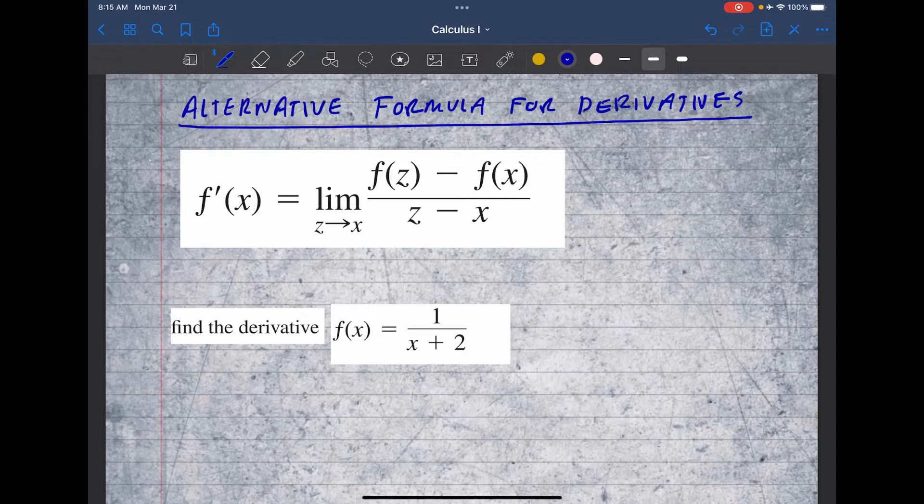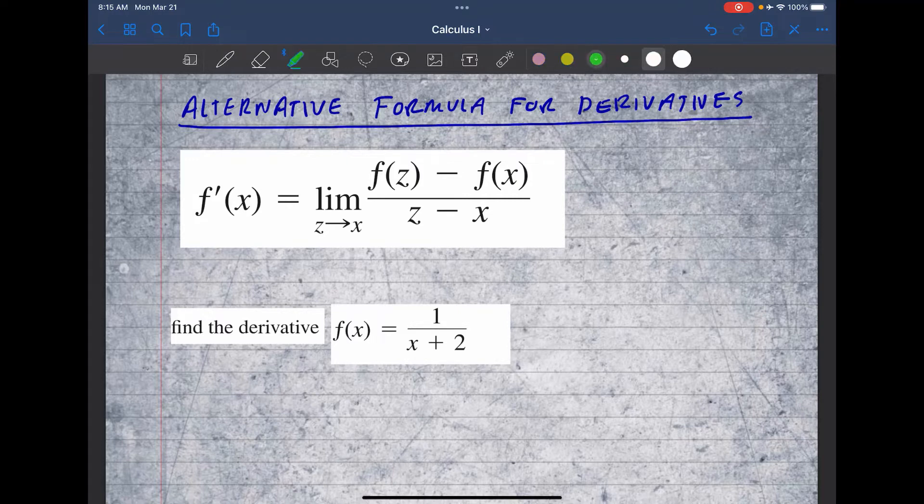Let's use this alternative limit definition of derivative to find the derivative of functions. f'(x) is simply given by this limit: the limit of f(z) minus f(x) all over z minus x as z approaches x.